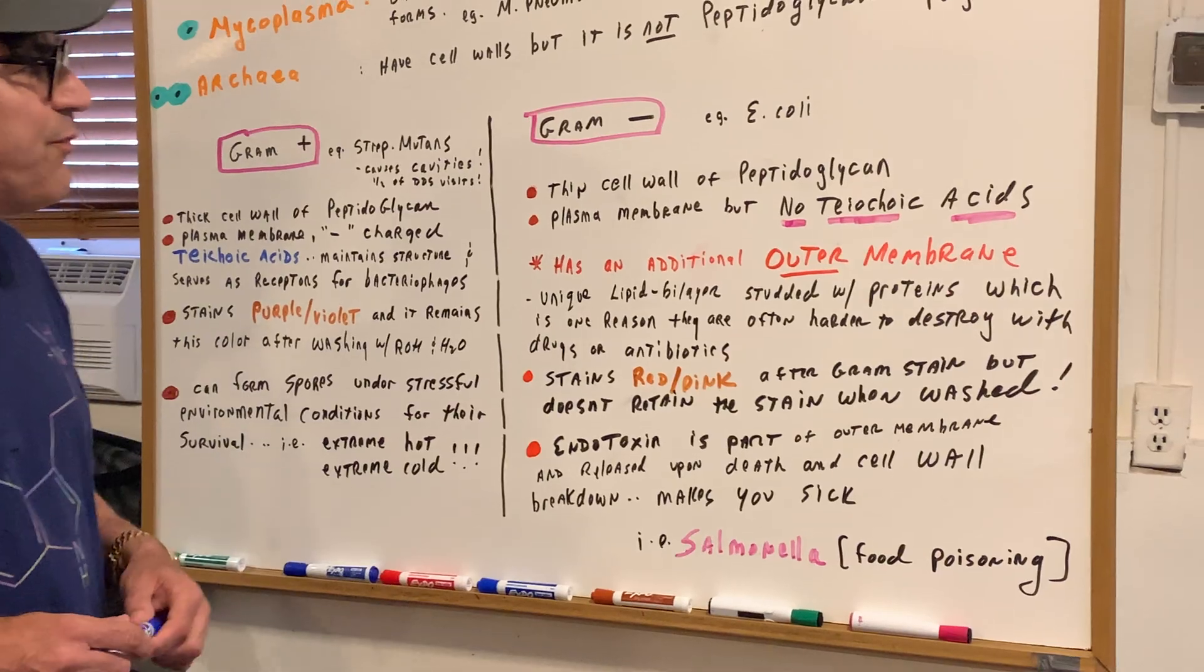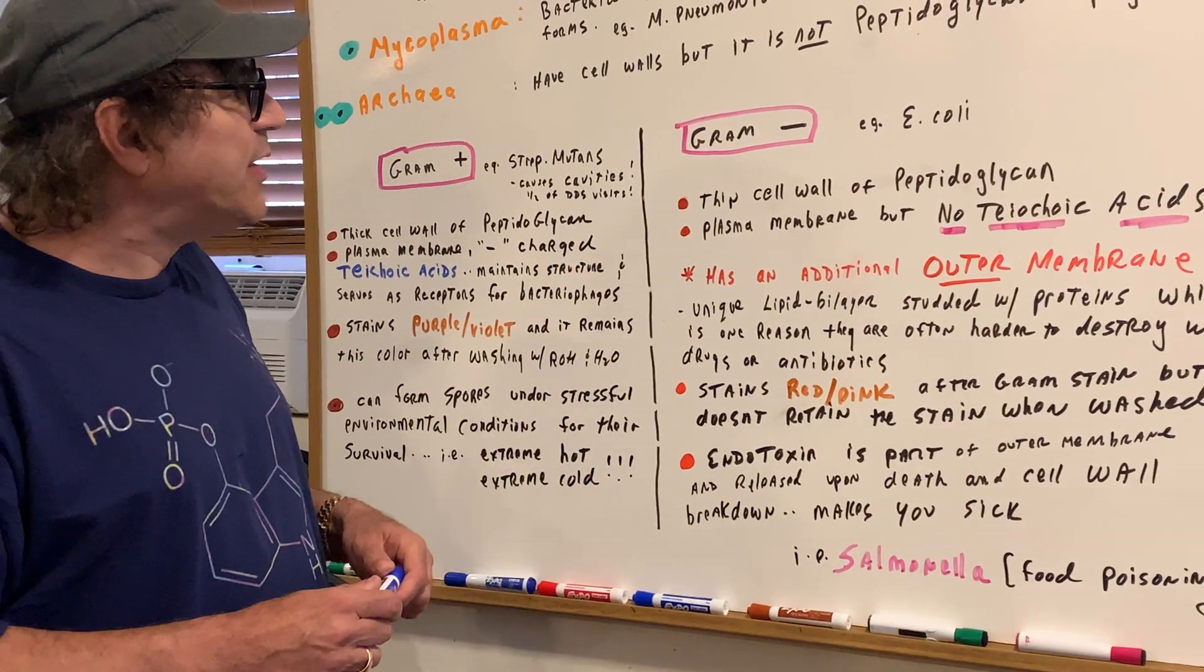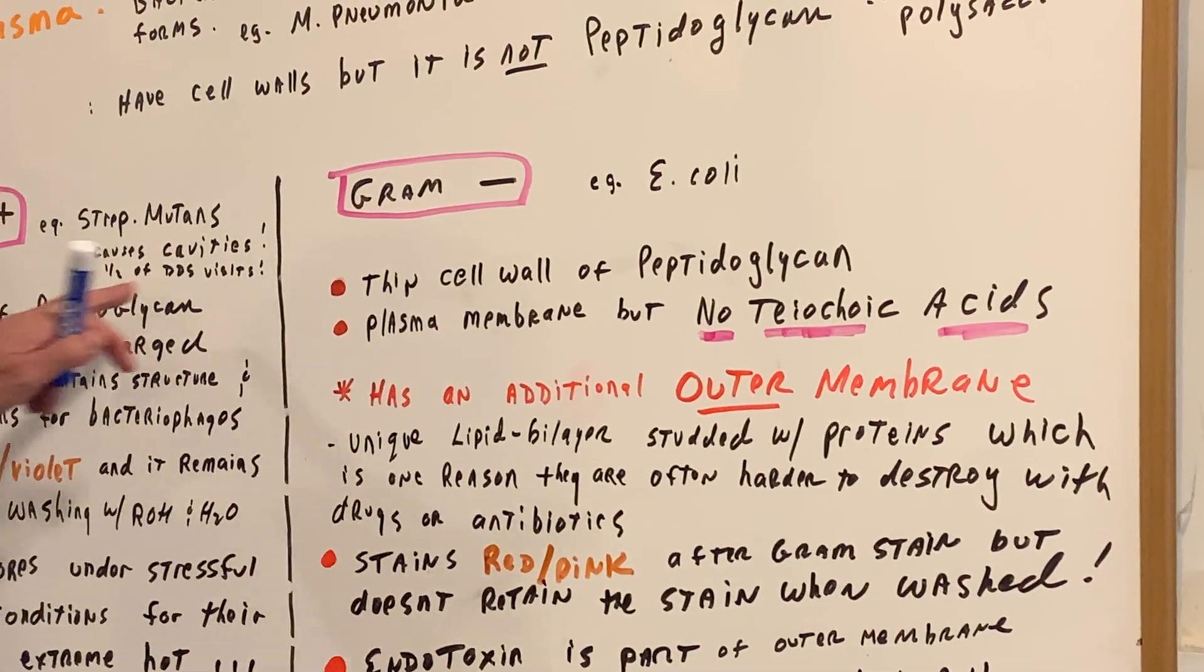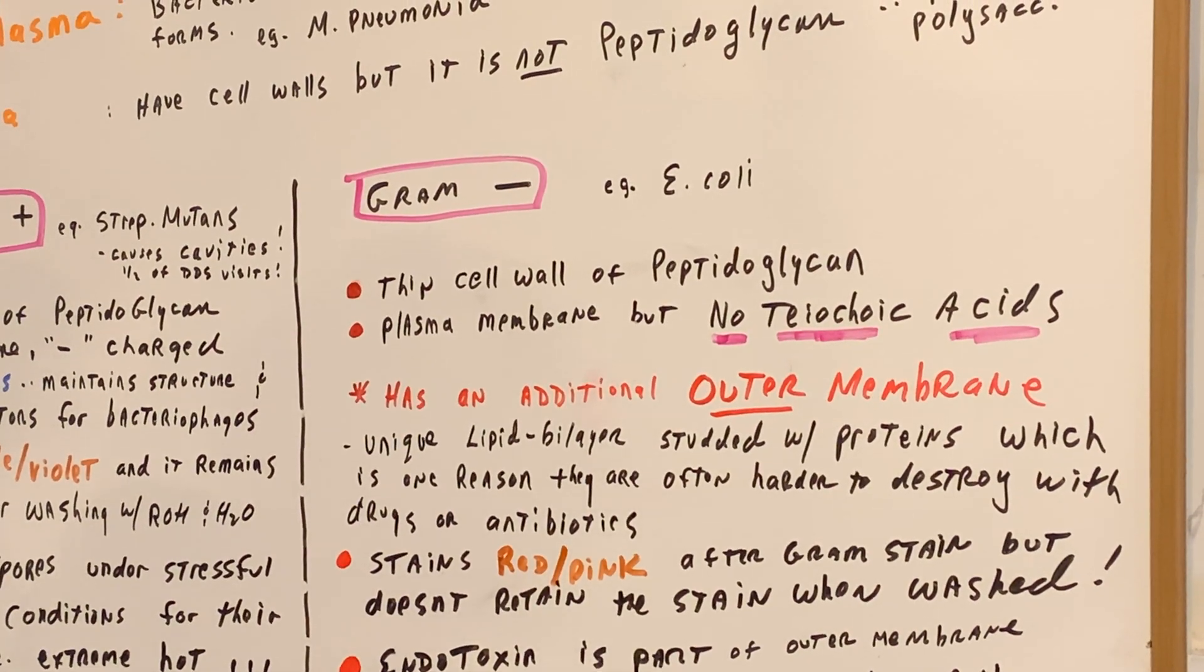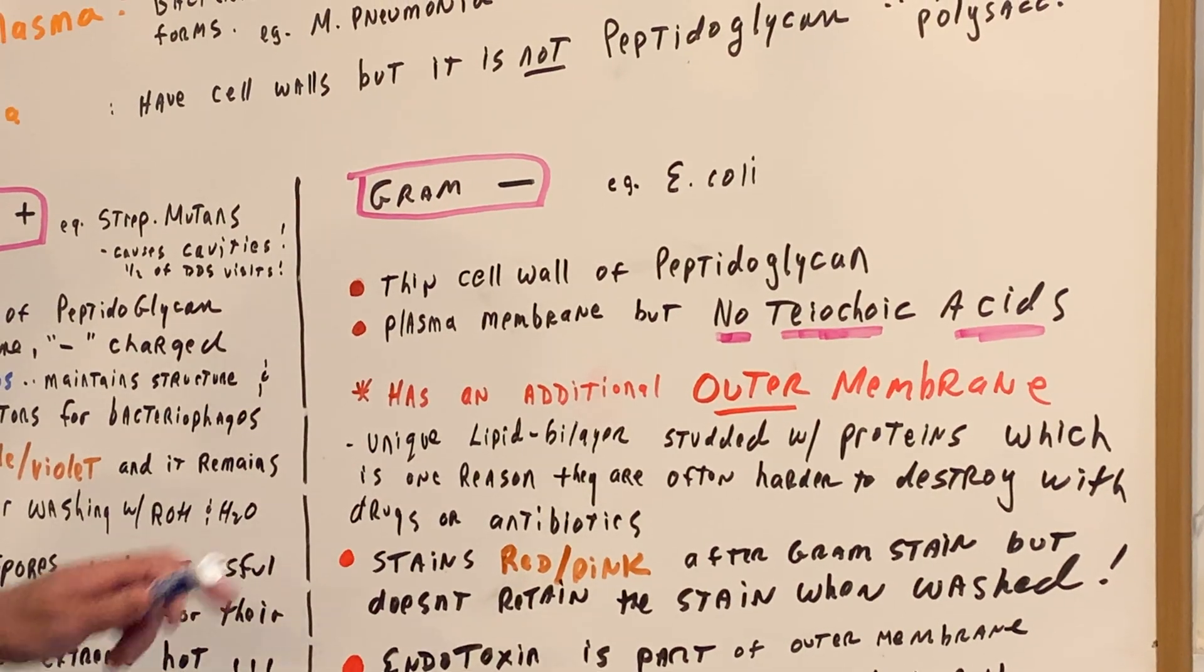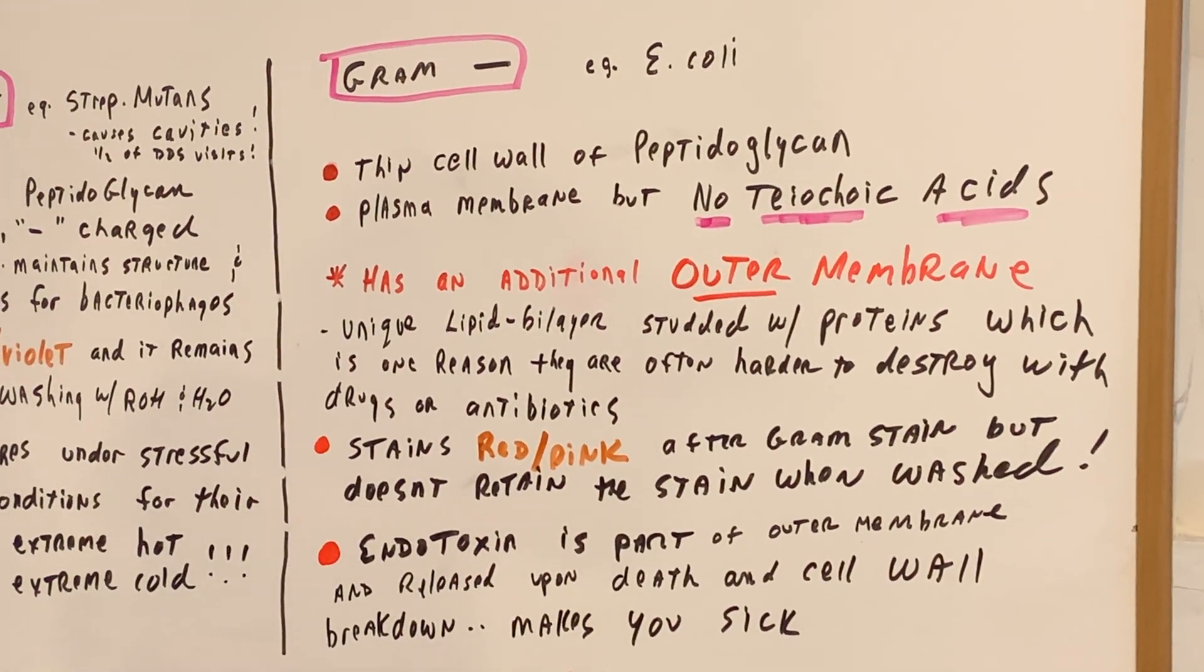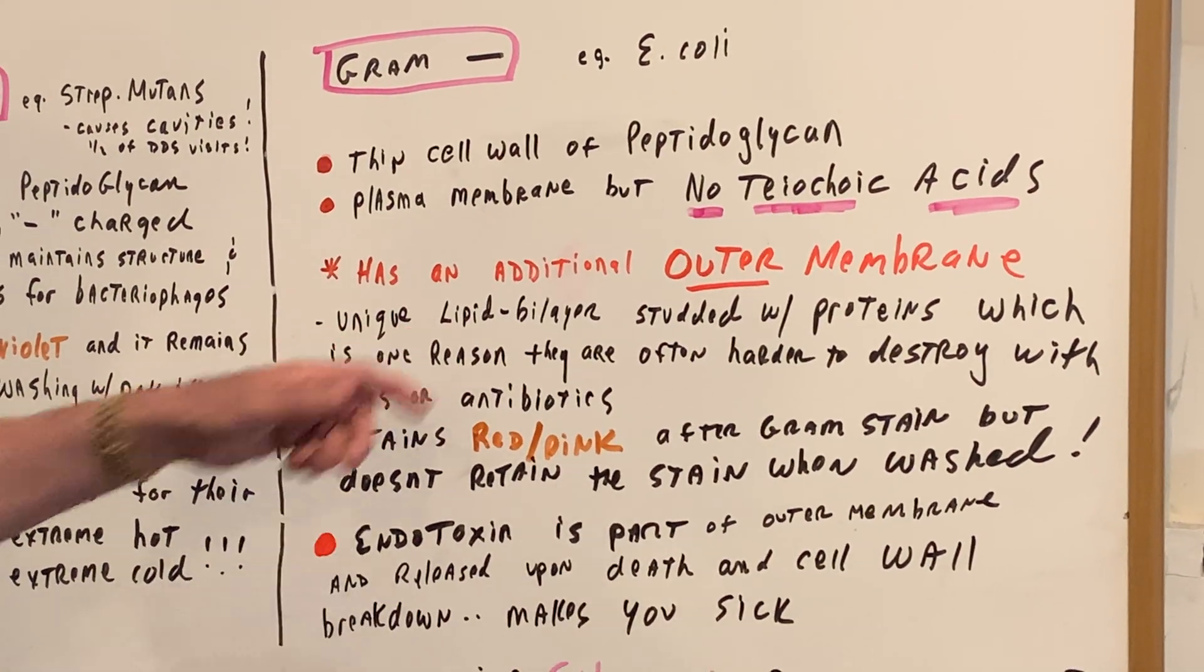Now, gram-negative bacteria, the most famous one, would be E. coli. They have very thin cell walls of peptidoglycan. They have plasma membranes, just like gram-positive, but they lack teichoic acids. So, they lack the teichoic acids, but they have an additional outer membrane, which is always a trick question. This outer membrane is unique to the gram-negative bacteria.